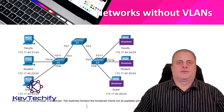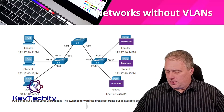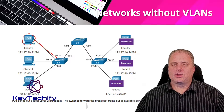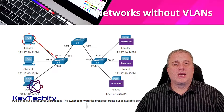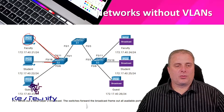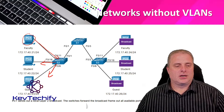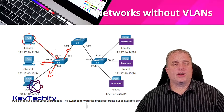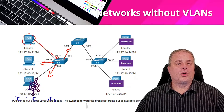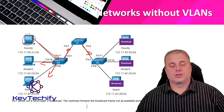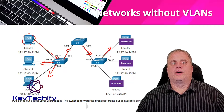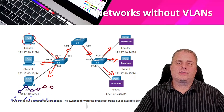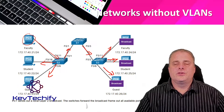If your network doesn't use VLANs, there are a couple of issues. PC1 sends out a broadcast, which travels down to Switch 2. A switch forwards a broadcast out all ports except the one it received it on — so it sends it out to PC2, PC3, and out to Switch 1. Switch 1 gets that broadcast and forwards it to Switch 3, which then sends it out to all its connected ports. That broadcast goes all the way across the network, increasing congestion and using up bandwidth.